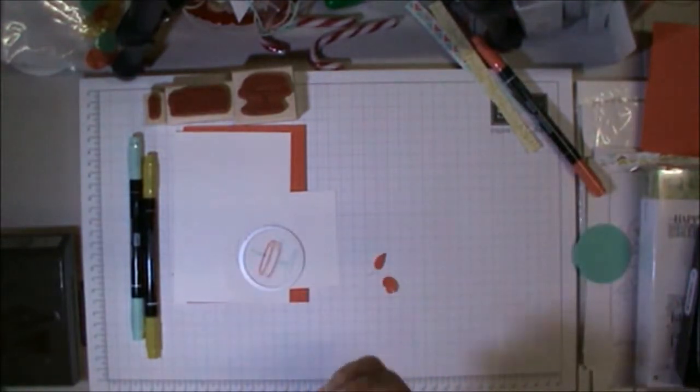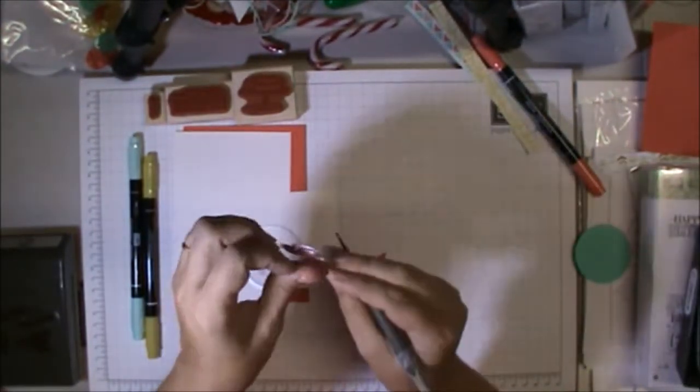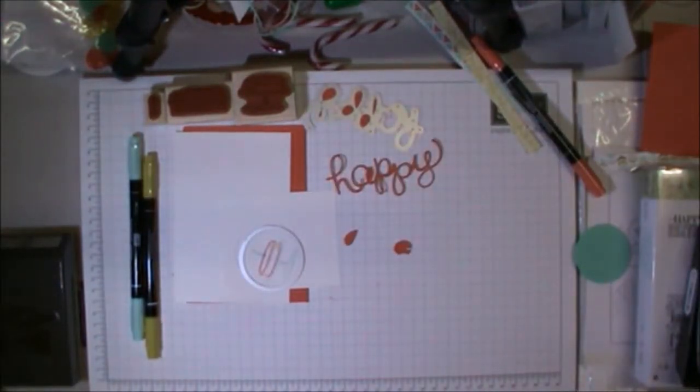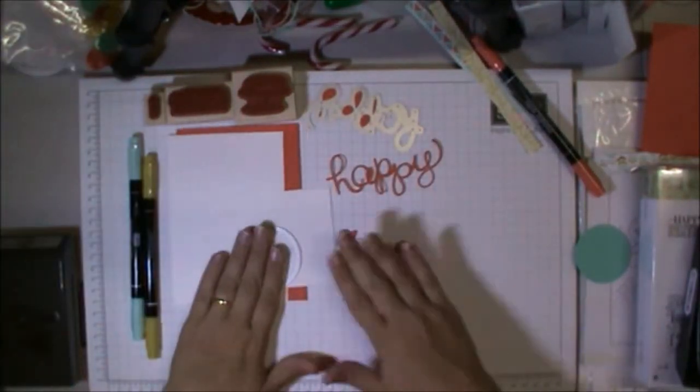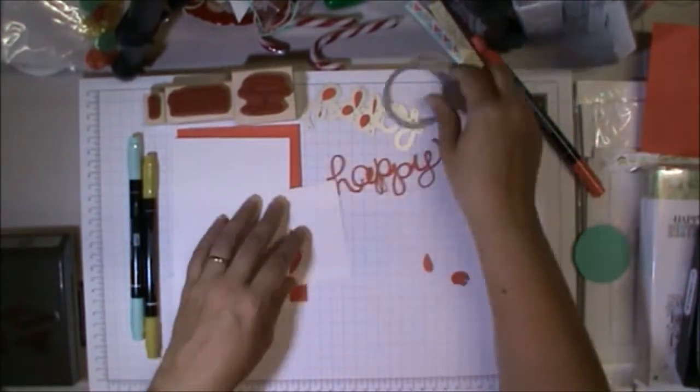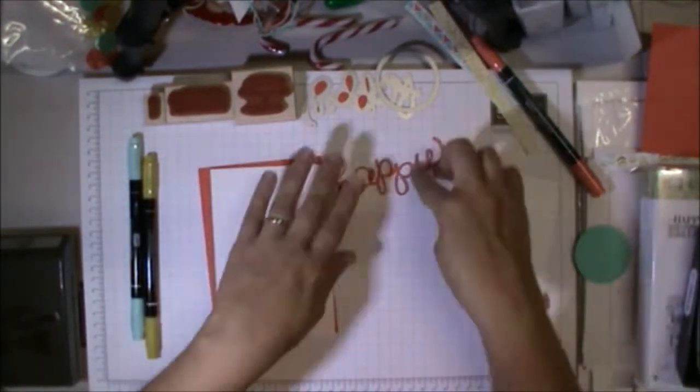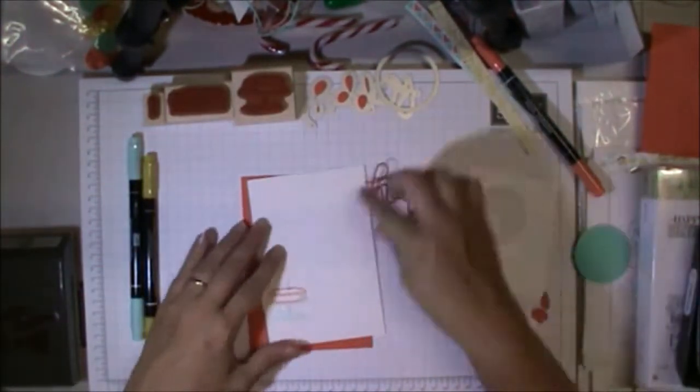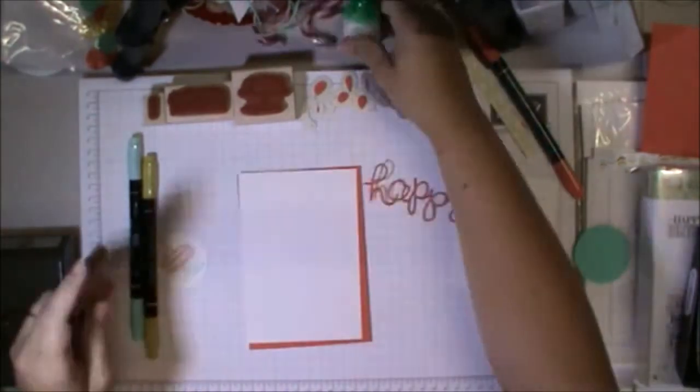This little 'happy' is from the Hello You Thinlits Dies, which is new in the Occasions catalog that's out on the same date. You get 'happy,' 'hello,' and 'thanks' in the set—super cute and easy to use. I also cut out the little cake with one of these circle framelits.